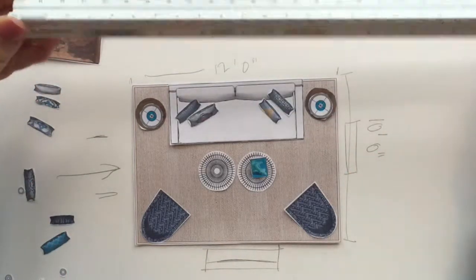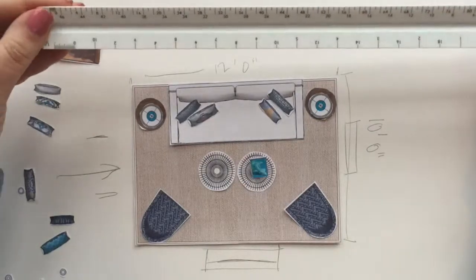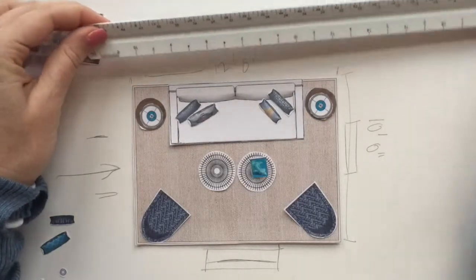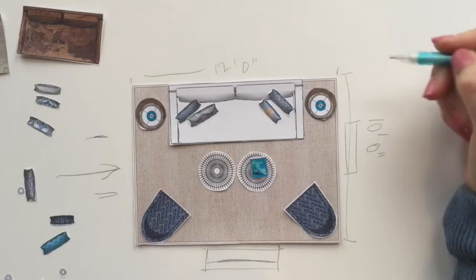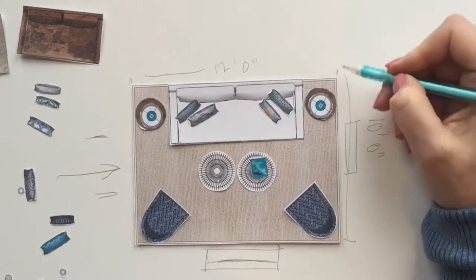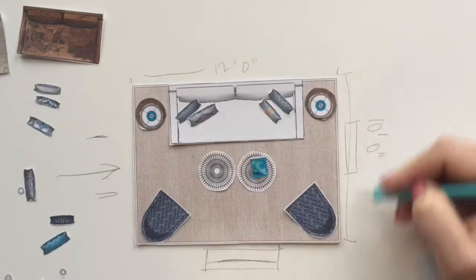So these are these great three-way rulers that you can find at any office supply store. They're kind of invaluable, but right now I wanted to show you that this room would be really teeny. Let's look at how this would work in a really small space. So it's 12 feet by 10 feet.